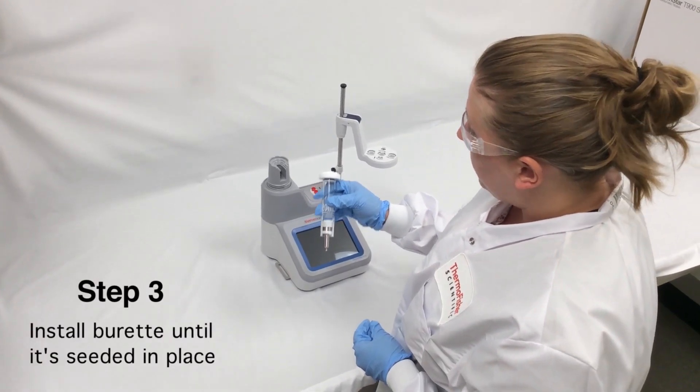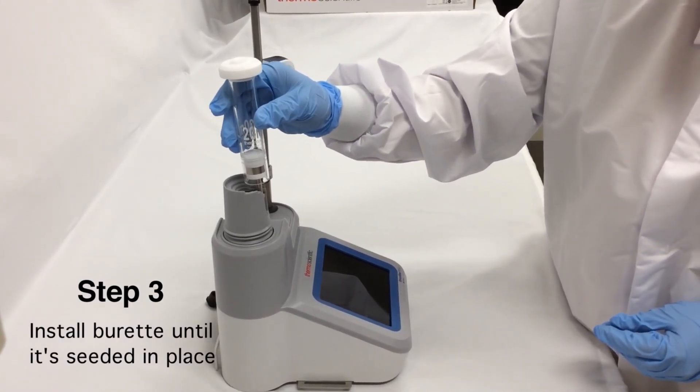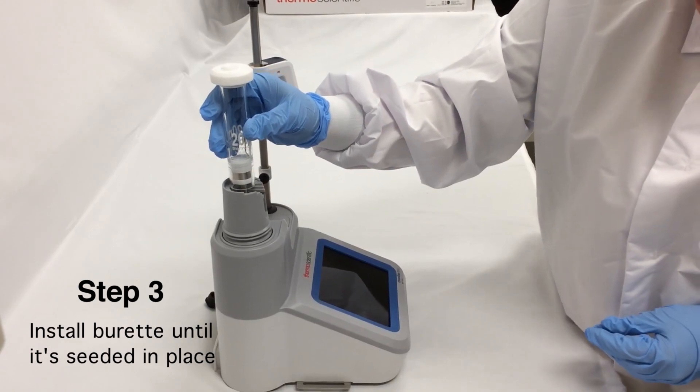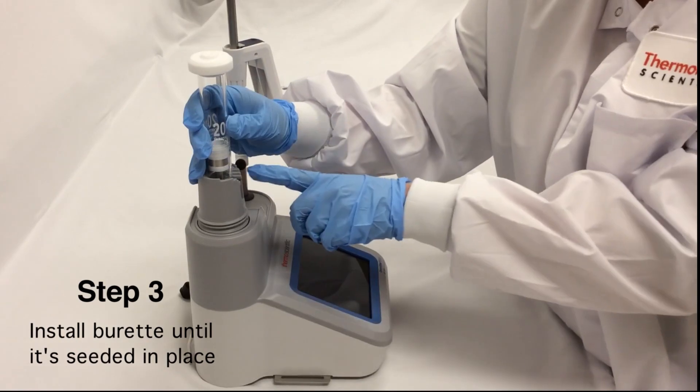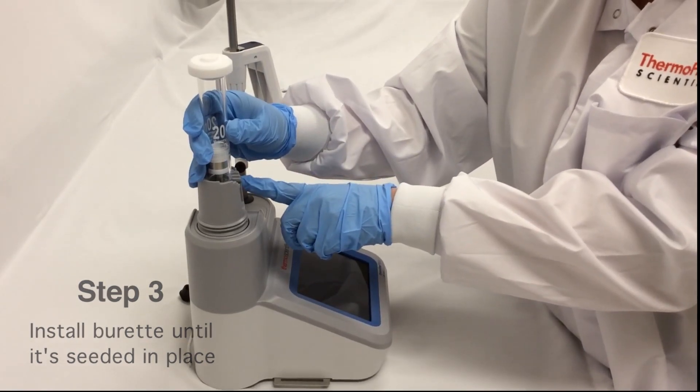Install the burette by lining up the piston ball on the burette with the clasp on the titrator. Gently slide it in and push down on the top until the burette is seated in place.